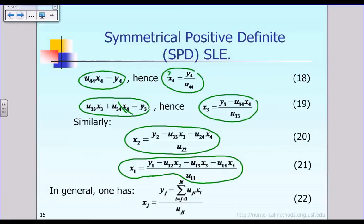Now you can see why we call this phase the backward solution phase. The reason is obvious: because we solve for the last unknown x4 first, then go back to solve for x3, then go back to solve for x2, and go back to solve for x1. That order of computation is why we call it the backward solution phase.